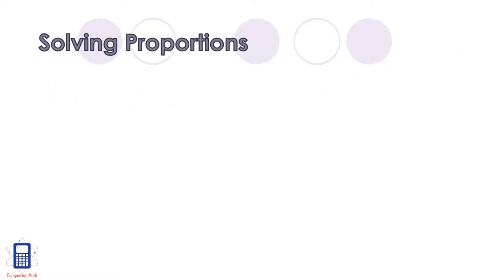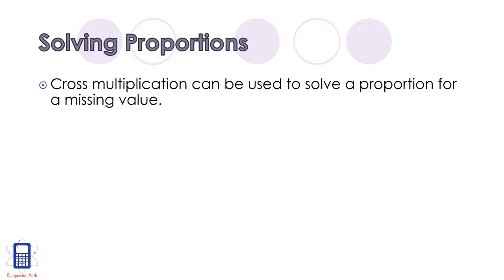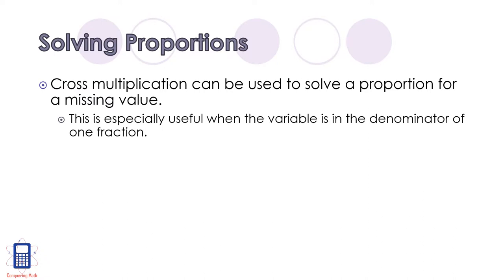There are two main ways of solving proportions for an unknown value. The most commonly used method is cross multiplication. This can be especially useful when the variable is in the denominator of one of the fractions in the proportion. The nice thing about using cross multiplication to solve a proportion is that it works the same way every time, but what this means is sometimes students use it when it's not actually the easiest method.